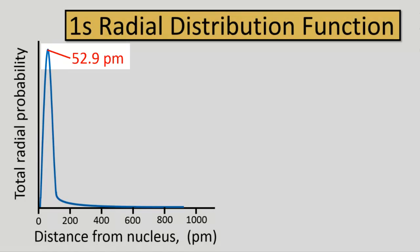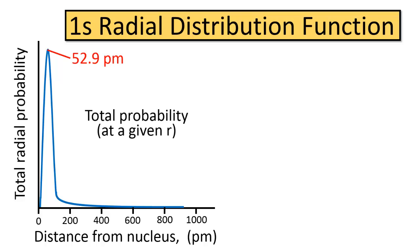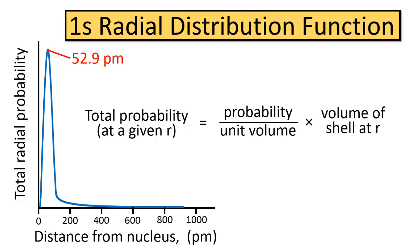After that, the probability decreases with increasing distance from the nucleus. The shape of the curve is what it is because the total electron probability is obtained by multiplying two terms: the probability density and the volume of the spherical shell at a given radius. As R increases, the probability density decreases.